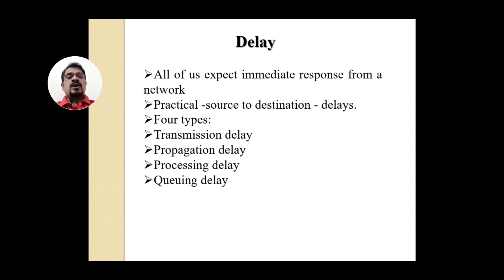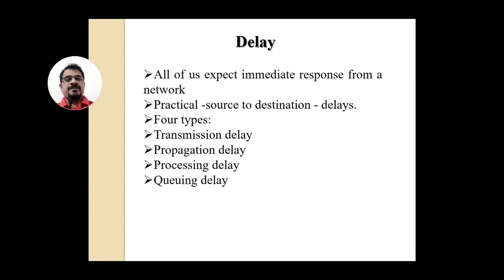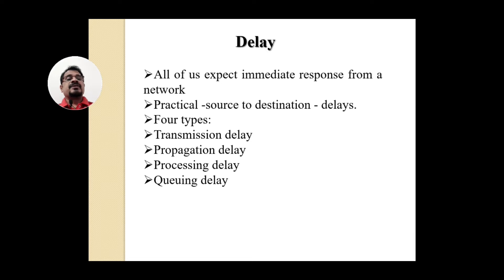Everyone expects an immediate response — if you browse something from the internet, you want to get it immediately. In practical terms, it is not possible to have zero delay, but the network always tries to reduce delay as much as possible. In practice, from source to destination there will be some delays, and there are four types of delays that are normally experienced.